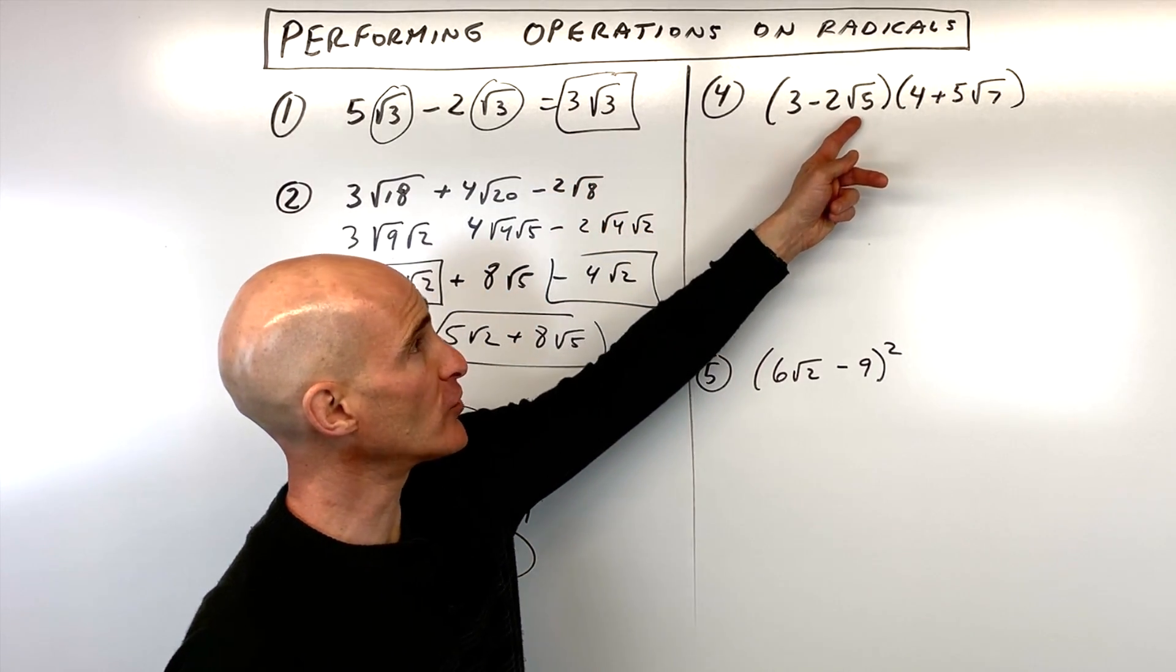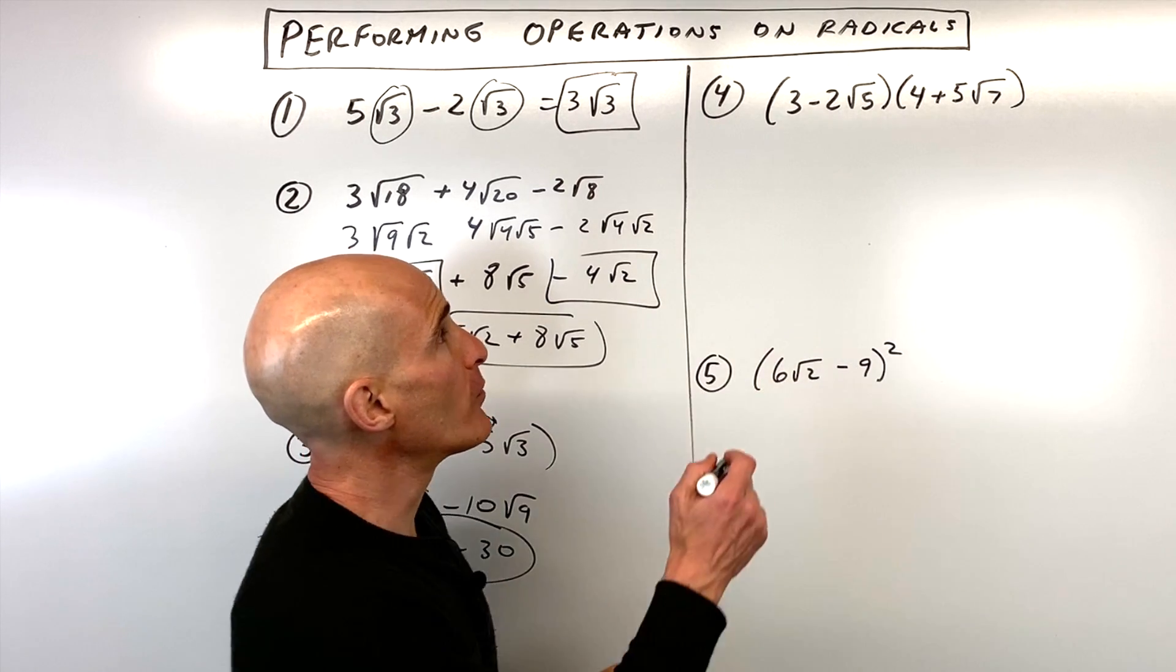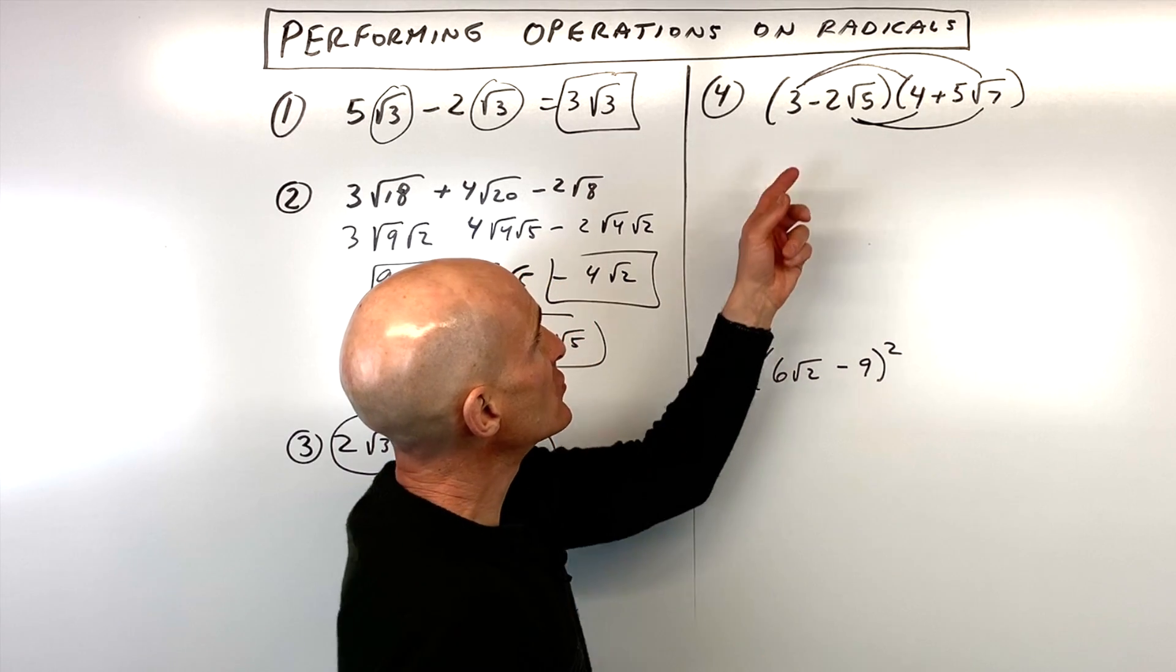we're multiplying a binomial, two terms, times another binomial, two terms. So what you can do is you can either use the foil method or you can distribute twice. Okay, so let's go ahead and do that.